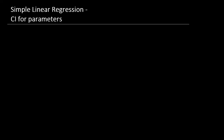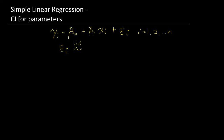In this video, we're going to talk about confidence intervals for the model parameters of a simple linear regression model. As a reminder, the simple linear regression model is that y_i equals beta-naught plus beta-1 x_i plus some model error, for i equals 1 to n. We're working with the assumption that this model error is iid normal with mean 0 and variance sigma-squared.